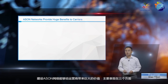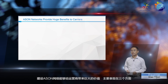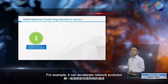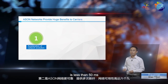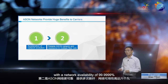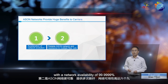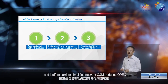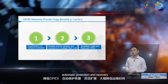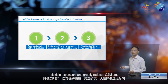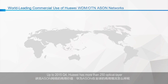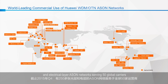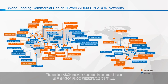ASAN networks provide huge benefits to carriers, mainly reflected in the following aspects. It can accelerate network evolution and provide customers with multiple SLAs with different experiences. It is more reliable and offers resistance to multiple fiber cuts with a network availability of 99.9999%. It also offers carriers simplified network O&M, reduced OPEX, automatic protection and recovery, flexible expansion, and greatly reduces O&M time. Up to the fourth quarter of 2015, Huawei has more than 250 optical layer and electrical layer ASAN networks, serving 50 global carriers. The earliest ASAN network has been in commercial use for more than eight years.